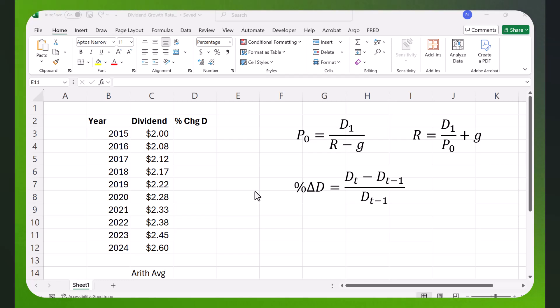The first thing you need to do is calculate the percentage change from period to period. The percentage change in the dividend is the dividend in time period T minus the dividend in the previous period divided by the dividend in the previous period. Even though we have data in 2015, we start in 2016 because we need two pieces of information. This is going to be DT and this is going to be DT minus 1.